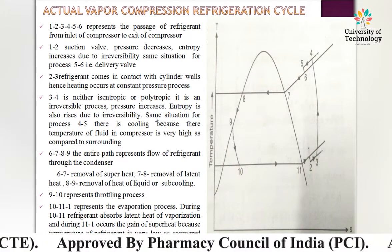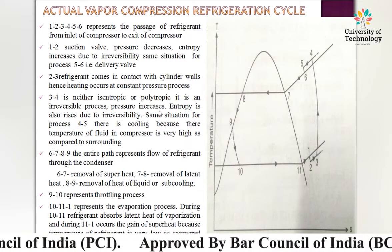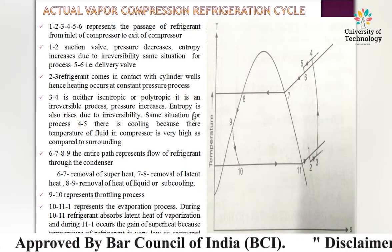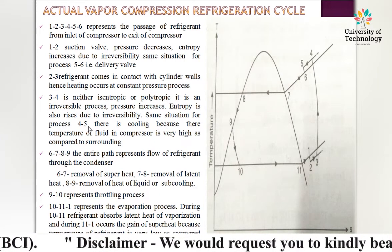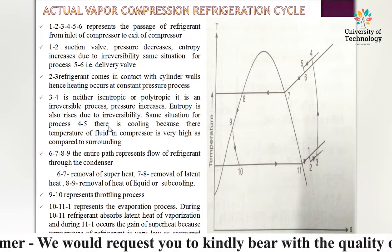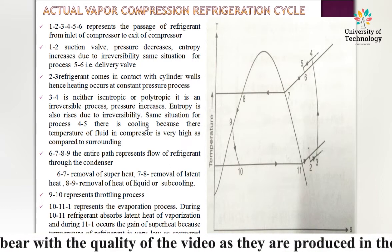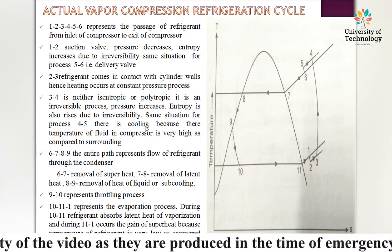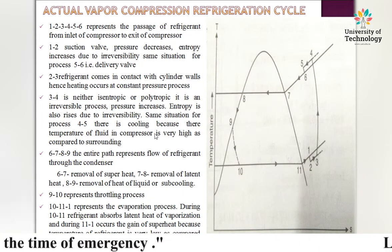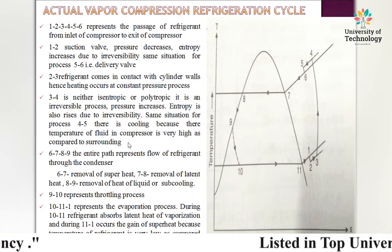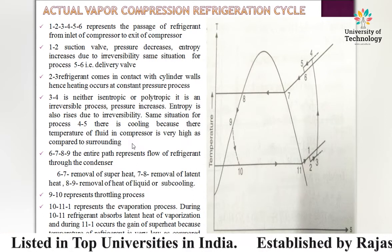Process 4→5 is analogous to 2→3, but instead of heating there is cooling, because the temperature of the refrigerant leaving the compressor is very high compared to the surroundings. This completes the description of the 1-2-3-4-5-6 compressor section.